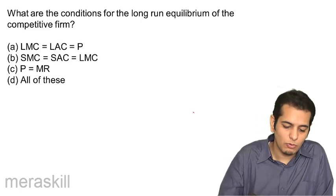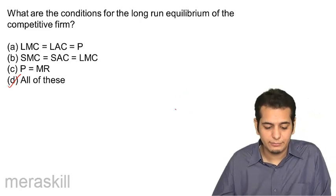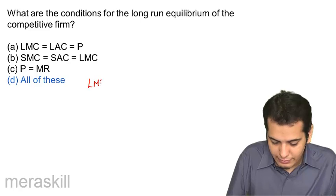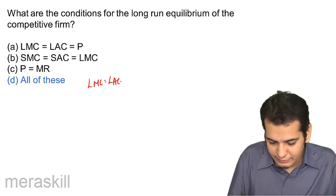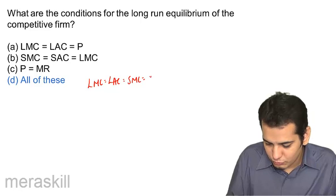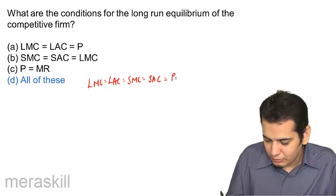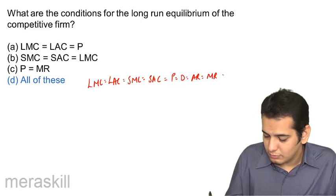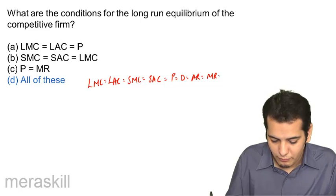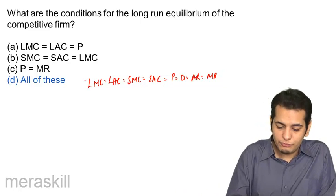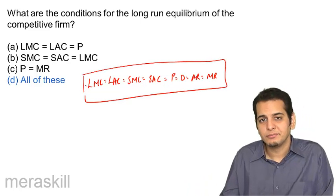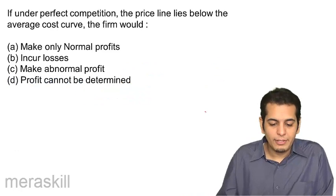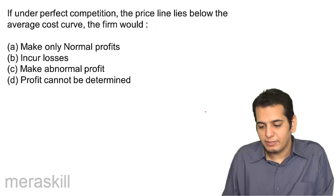The answer is all of these. Let's check. That's the answer. So in short, we can say in the long run: LMC equals LAC equals SMC equals SAC equals P equals D equals AR equals MR. In the long run, all of these meet at the same point, so all of them become equal.